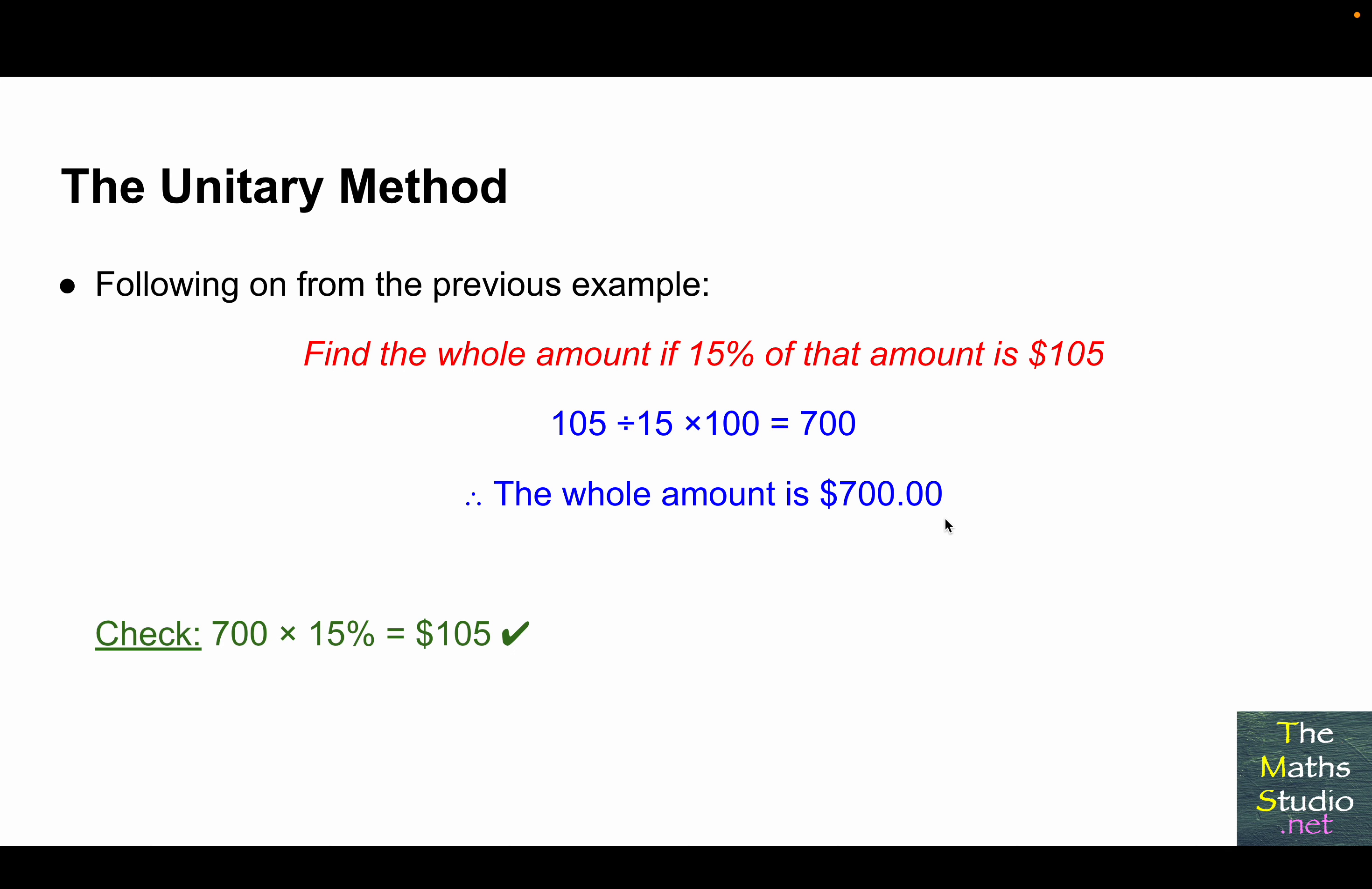Now, how do we know that $700 is correct? If we work out 15% of $700, and we do that by multiplying 700 by 15%, we get $105, which corresponds to the value in the question.